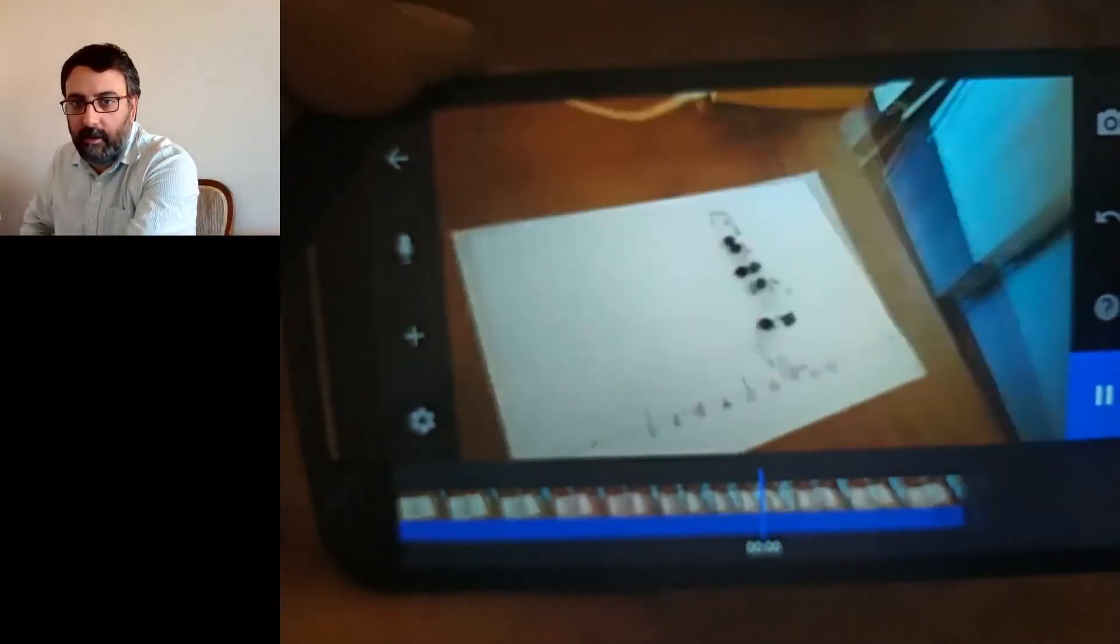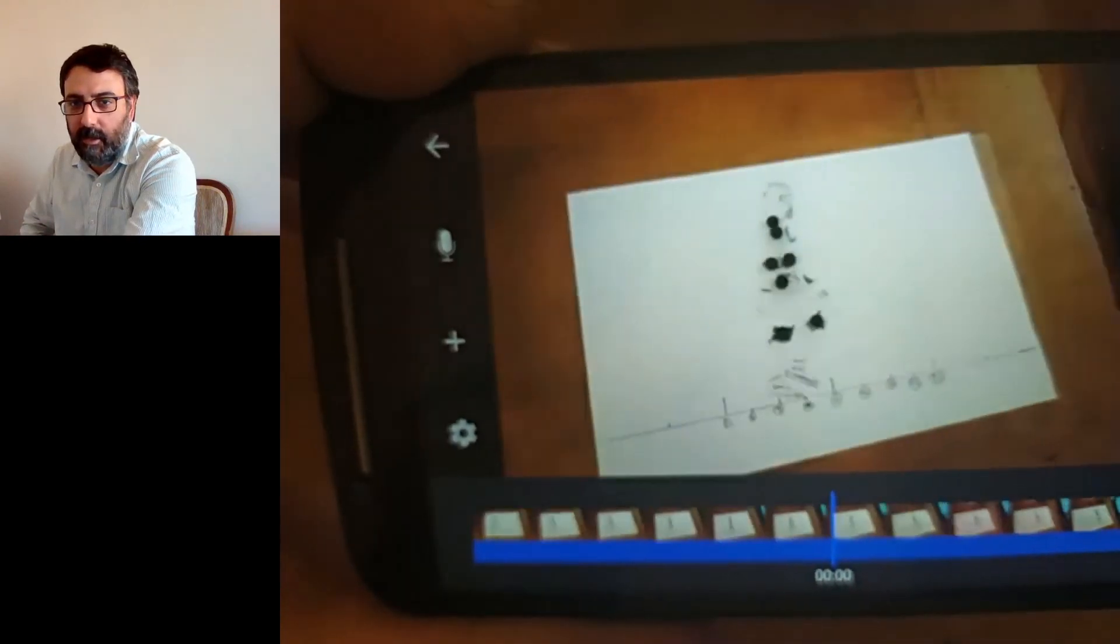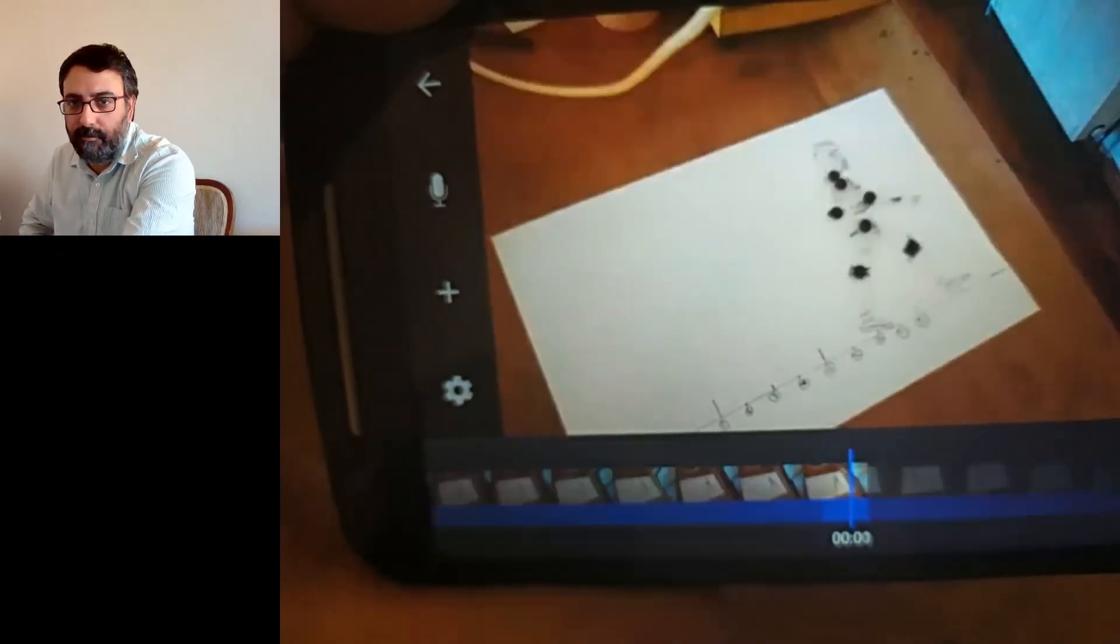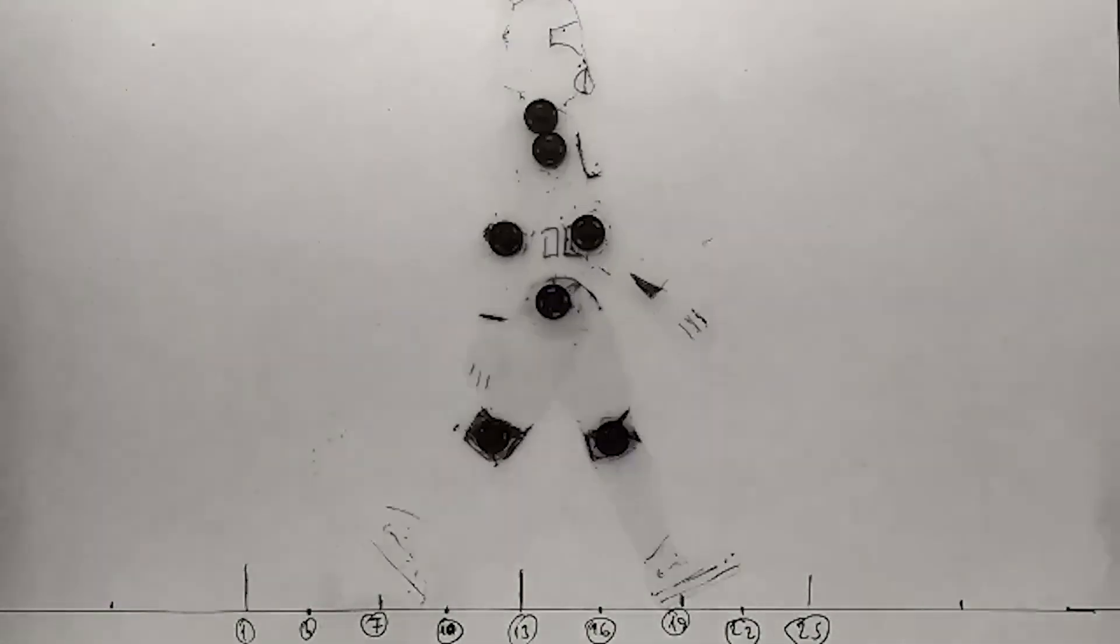If we choose 24 fps in settings of the stop-motion studio, our animation will be one second long. Let's see the result. Since I used this line below the puppet both as a ruler and a timeline, my movement is relatively smooth.